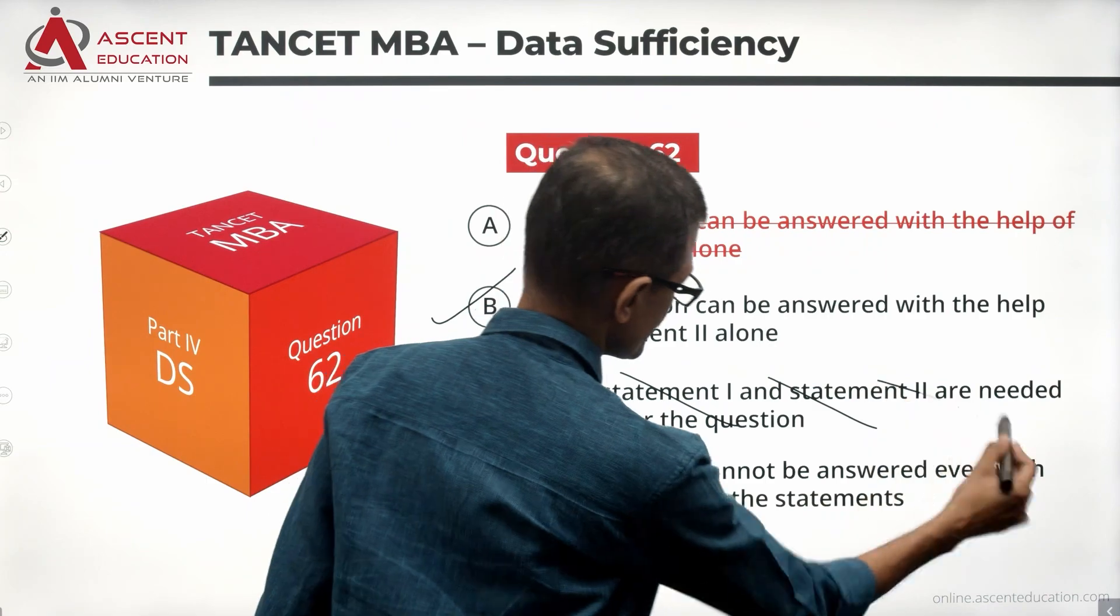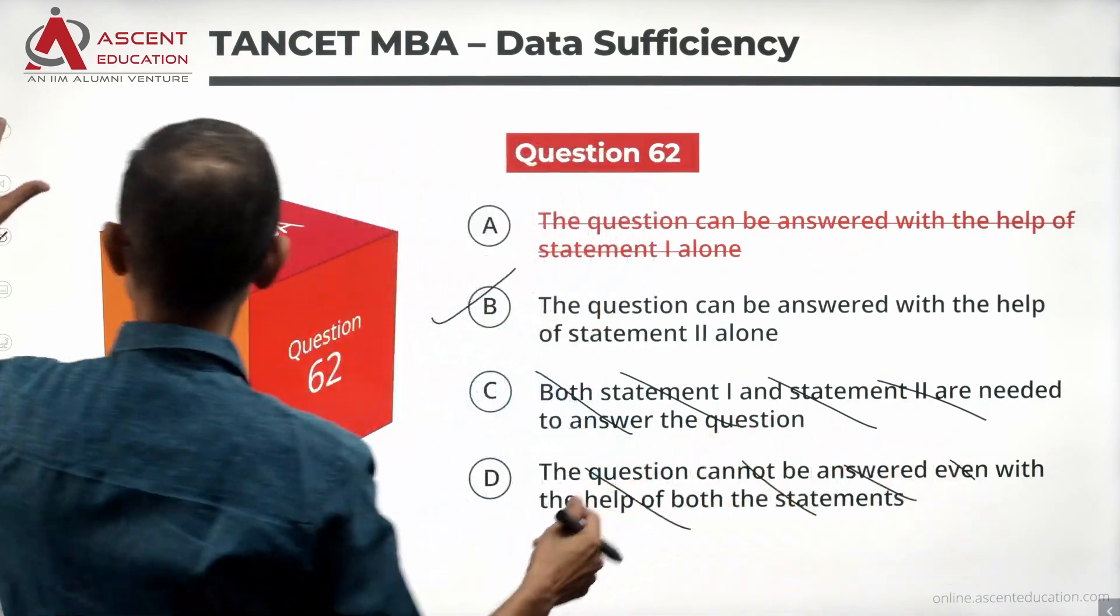Then the answer option is choice B. We can eliminate C and D. B is the answer to this question.